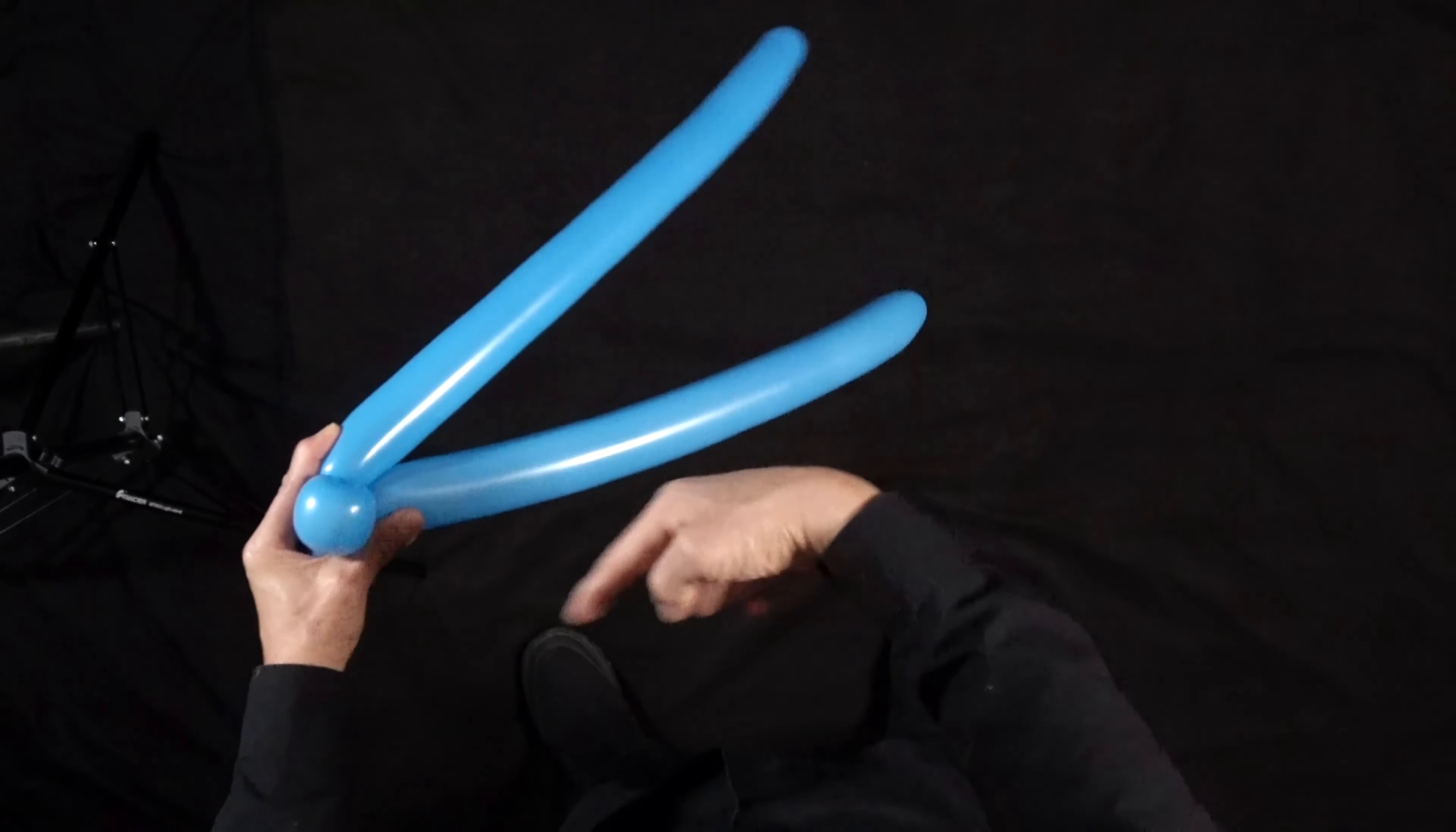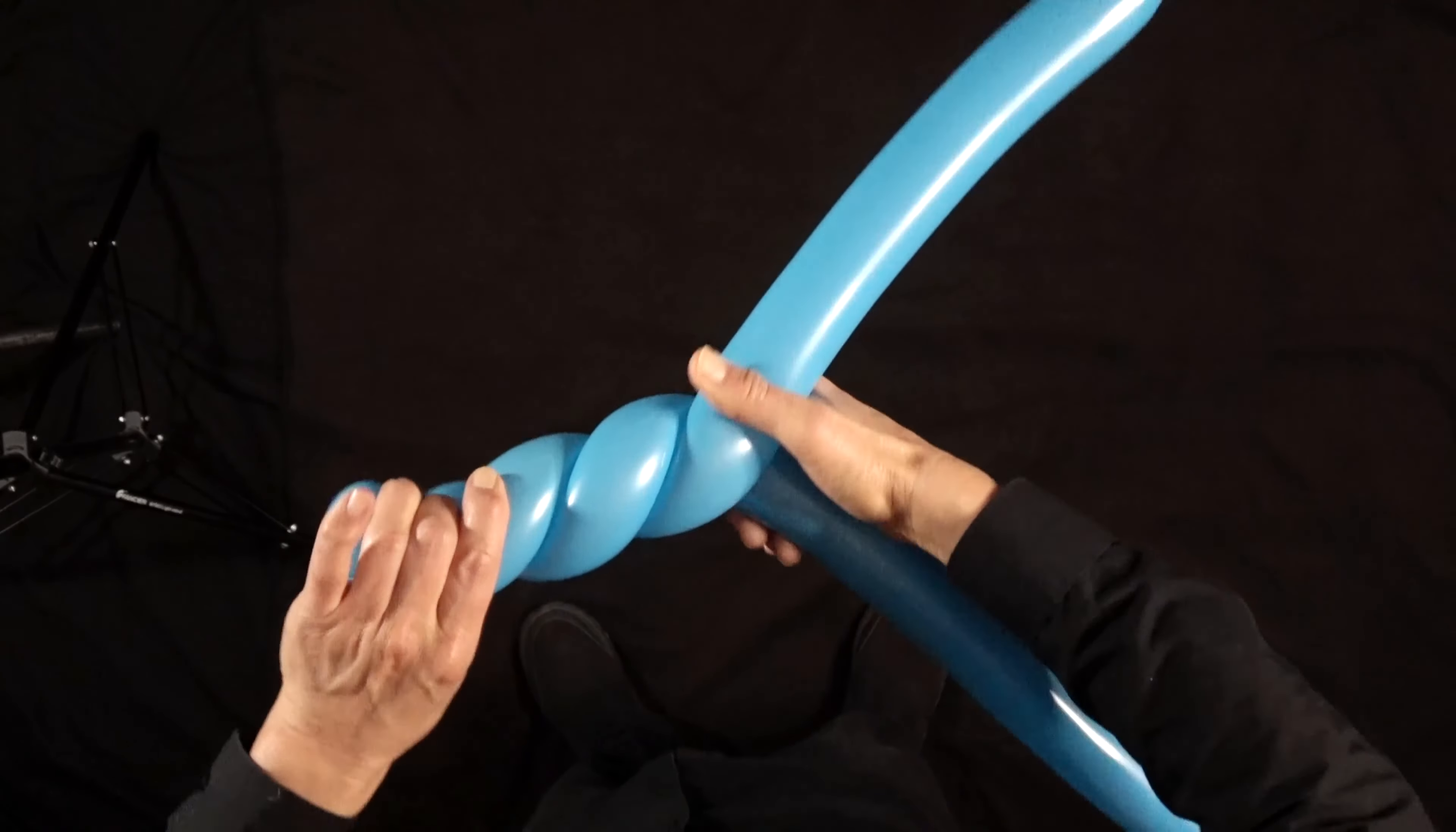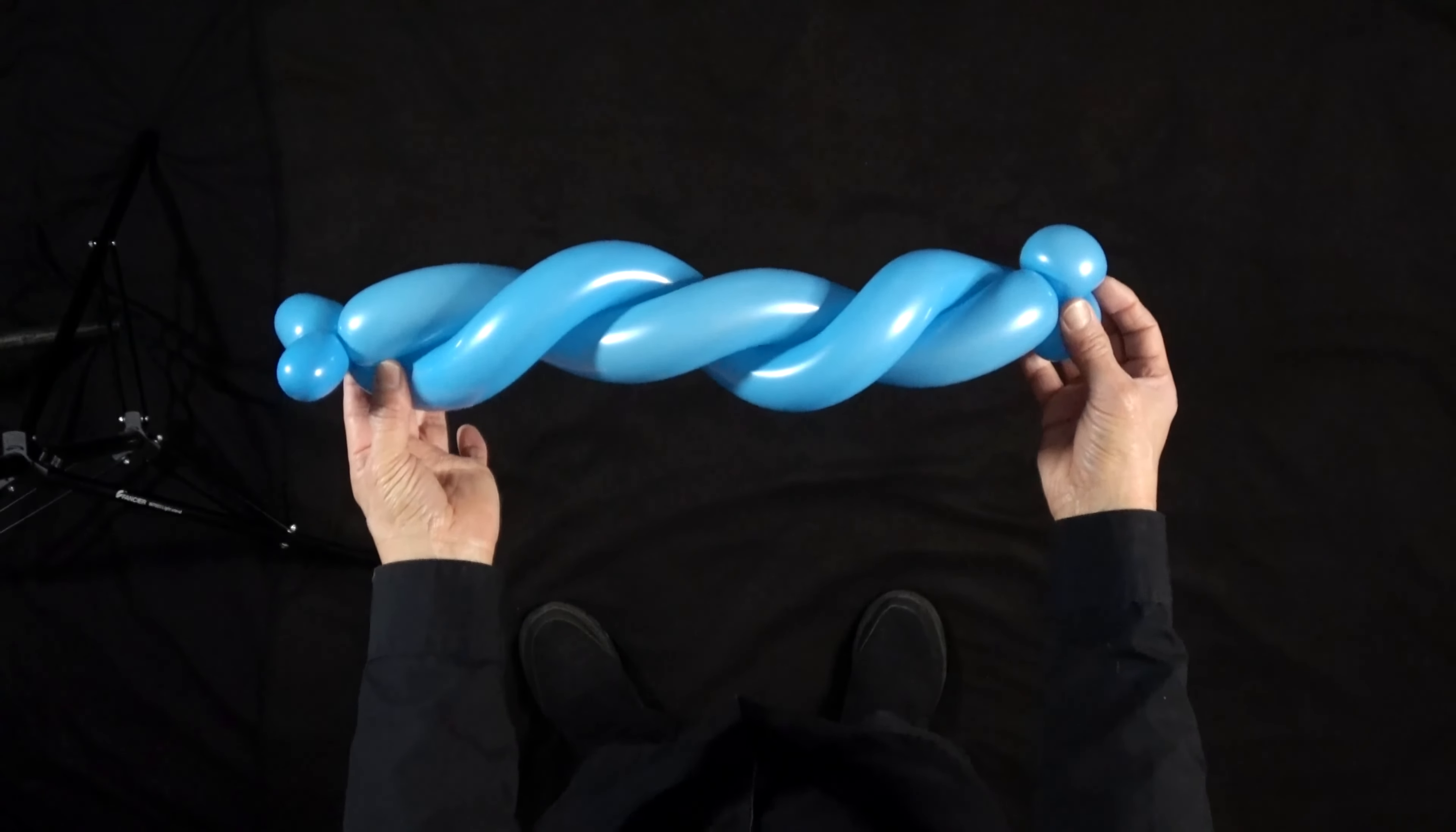And now we're ready to twist the balloon together. Now the technique I like to use here is I use my hand and I hook with the fingers here and hook with the thumb here. So the thumb goes under, fingers go over, and watch. I'll just show it to you. And twist these together. And you have your stick.